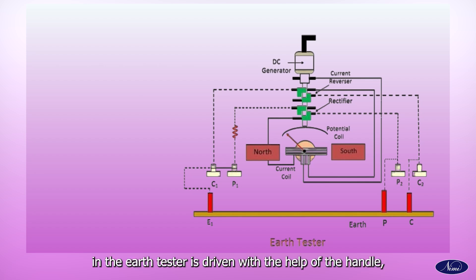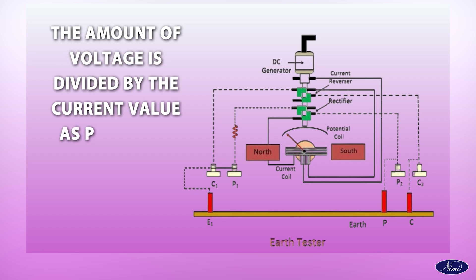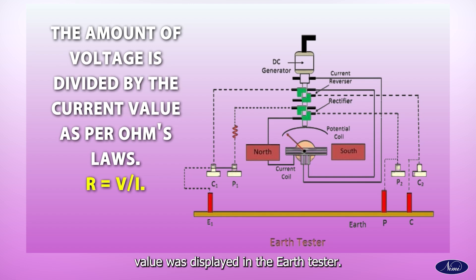When the DC generator in the Earth Tester is driven with the help of the handle, it will produce the electromotive force or voltage which will cause the current to flow to the Earth through the Earth rod. The amount of voltage is divided by the current value as per Ohm's law: R equals V upon I. The calculated resistance value is displayed in the Earth Tester.